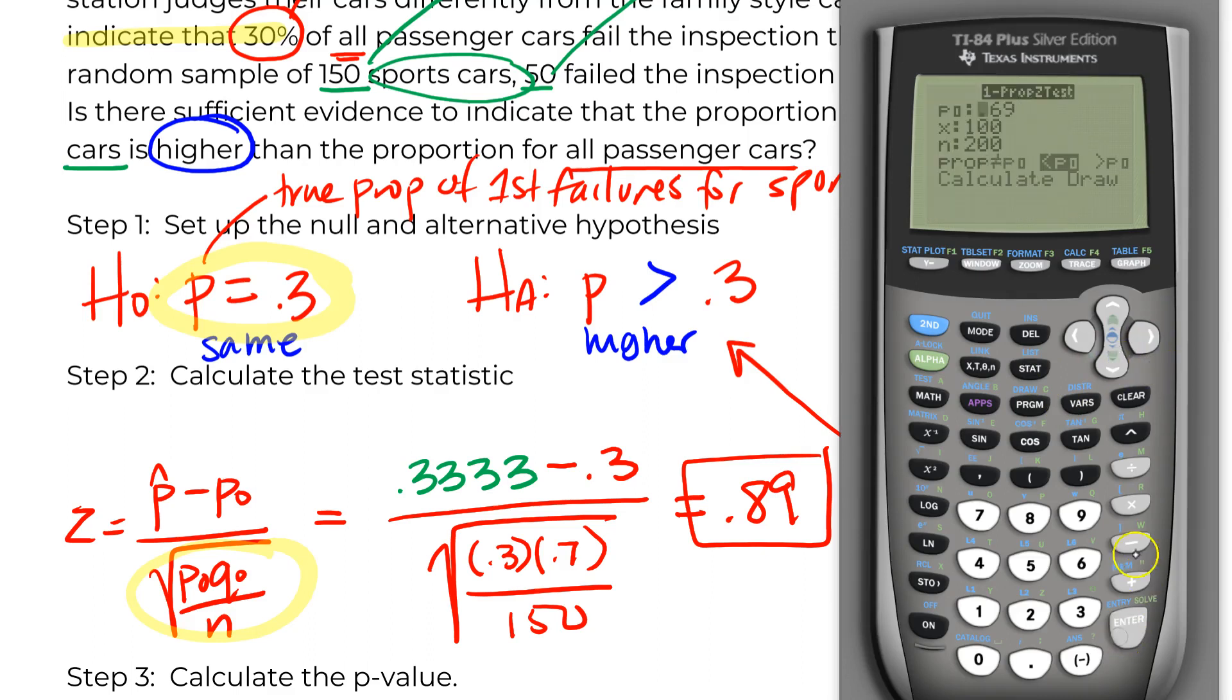And then remember if you have a big calculator, you can do all of this in one prop z test. It will do the whole thing for you. You just need to put in what your null value is, what your sample had as the number of successes in a size, and then what alternative you care about. And don't overthink this. This is saying the real proportion is greater than our value, which is exactly what we have here.